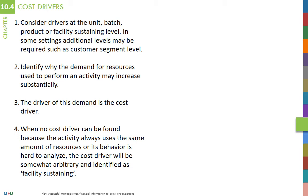One of the main features of activity-based costing is the assignment of cost to performance objects according to cause and effect relationships. This requires the identification of cost drivers — variables that drive the consumption of resources. In ABC systems, cost drivers play the role that allocation bases play in traditional cost systems. They trace costs from activities to performance objects. However, the logic employed to choose cost drivers is different from the one used for allocation bases.